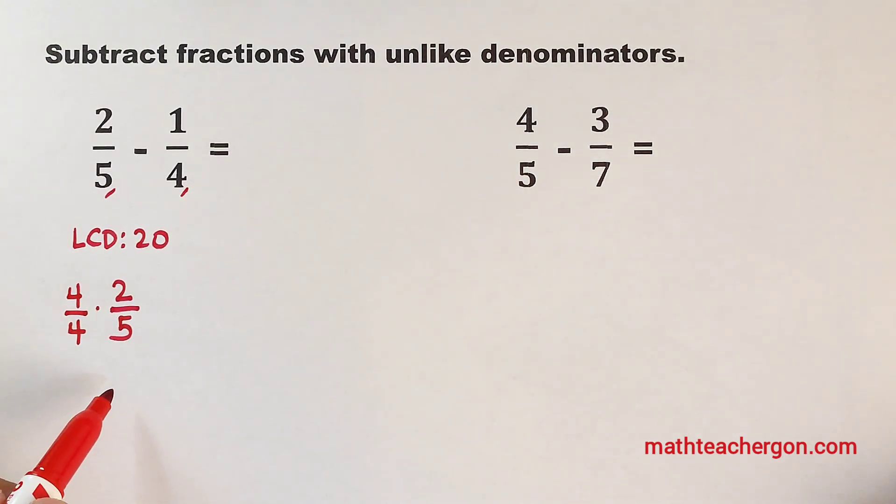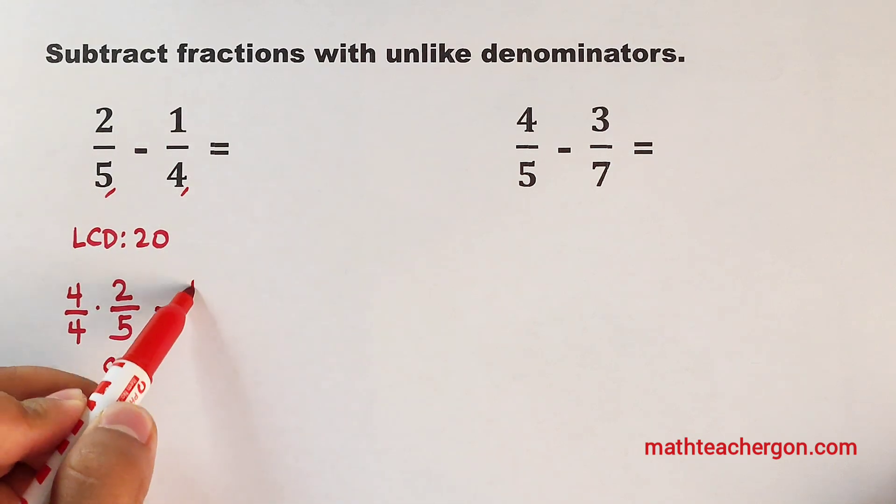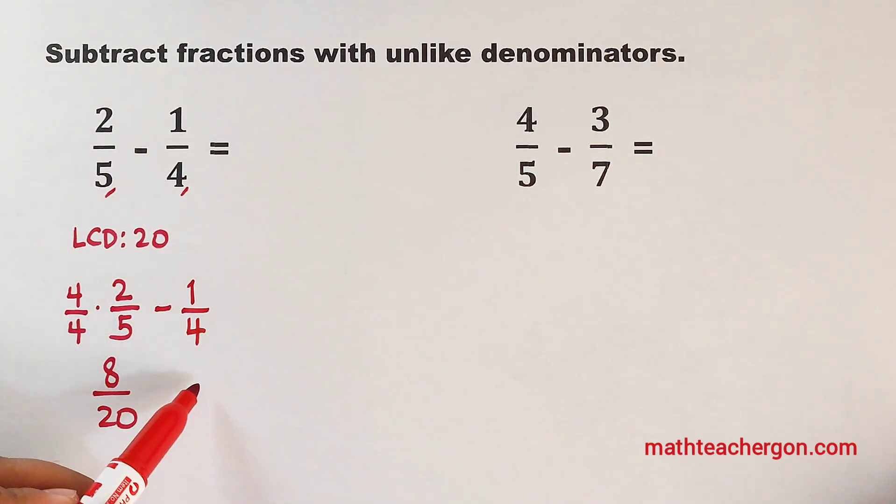So what will happen here? This 4 times 2 will become 8. And then for your denominator, we have 4 times 5, that would be 20. Next, this is minus, copy 1 over 4. Now, what is the number that we need to multiply to 4 to make it 20? Very good.